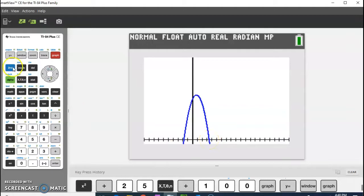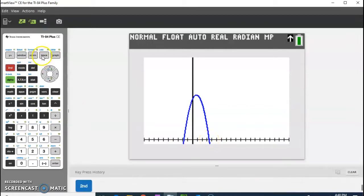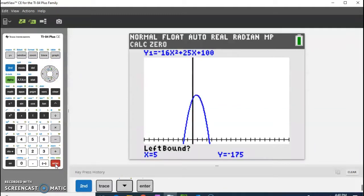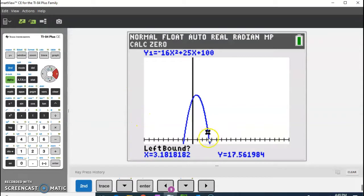So I'm going to go to second and trace. I'm going to choose zero. And I've got to find my spider. I don't see him right now. It's going to be here somewhere. Oh, there he is. Okay. So right now I am to the left and above because this is a zero I'm looking for. I'm to the left and above. So I'm going to hit enter.